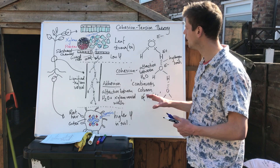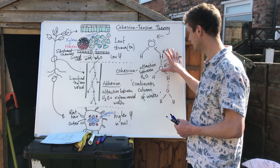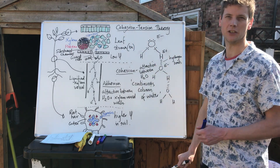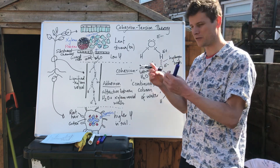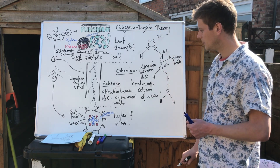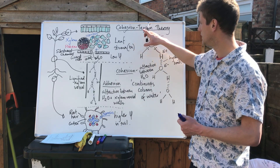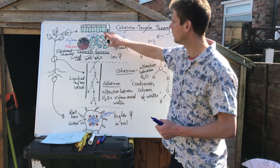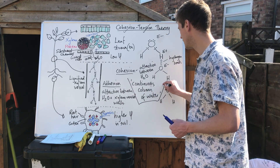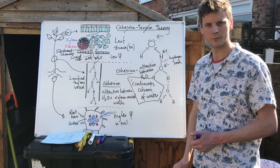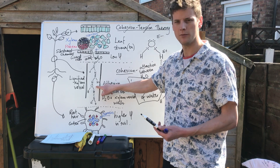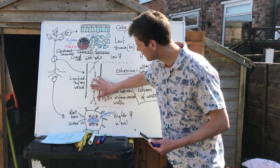The important concepts of cohesion-tension theory: firstly, the attraction between each water molecule is what we refer to as cohesion. The tension is that pulling force provided by the evaporation of water from the leaf. That cohesion and tension allows water to move from the roots all the way up to the leaves and out through the stomata, as long as there is a continuous column of water. If that continuous column of water is broken — if an air bubble enters the xylem, for example — that would break that chain.